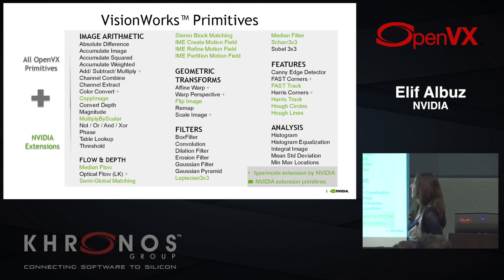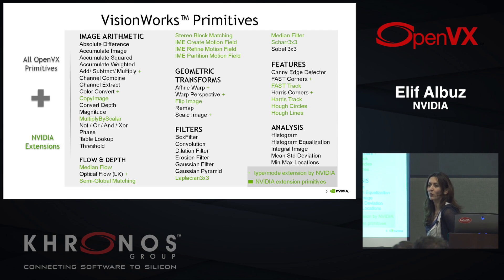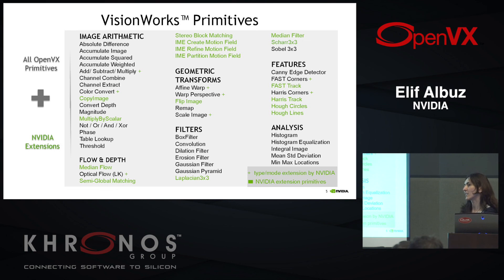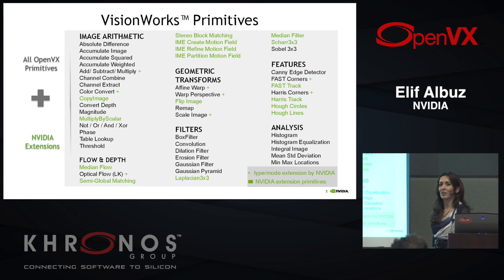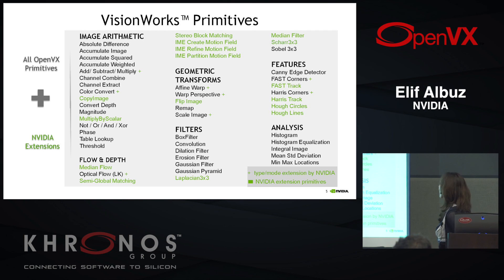Our main extensions are in optical flow, dense optical flow, and stereo. In addition, we have additions like FastTrack and HarrisTrack — these are grid variants of fast features and Harris features. The main difference is that instead of finding prominent features across the whole image, we split the image into a grid and find the most prominent features in each cell, so you can generate a uniform feature distribution for use in your algorithms.